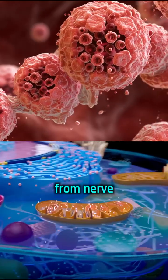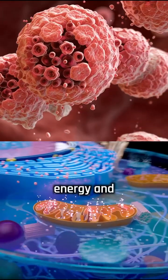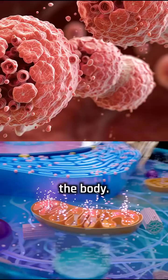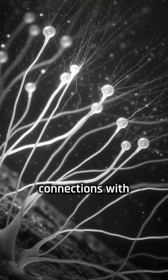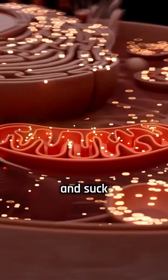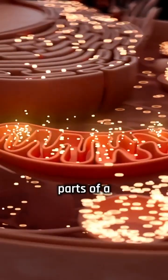Cancer cells steal mitochondria from nerve cells in order to boost their energy and survive the stress of spreading through the body. Scientists have discovered that cancer cells can form tiny tube-like connections with nearby neurons and suck out their mitochondria, the parts of a cell that make energy.